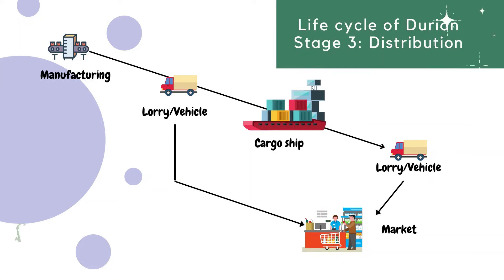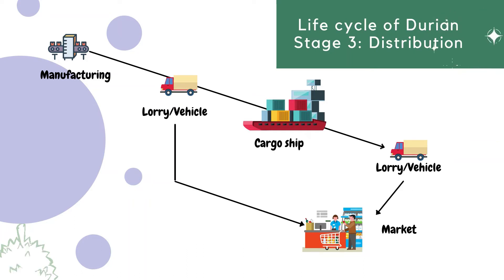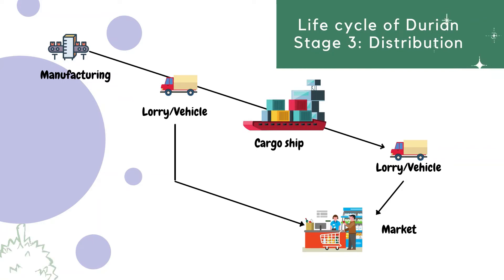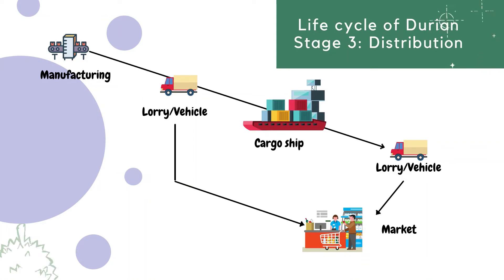Stage number three is distribution and transportation. There are two ways of transportation: ocean and land. Normally, when exporting durian to other countries, durian from the packaging process will be transported by lorries and cargo ship to reach the market. Other ways are straight away transporting from packaging, using lorries or vehicle to the market.